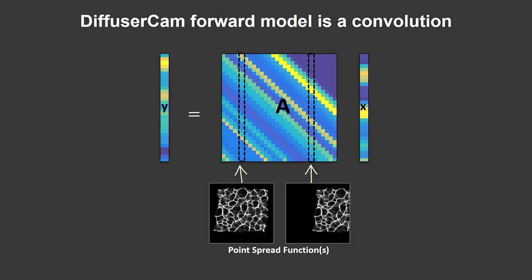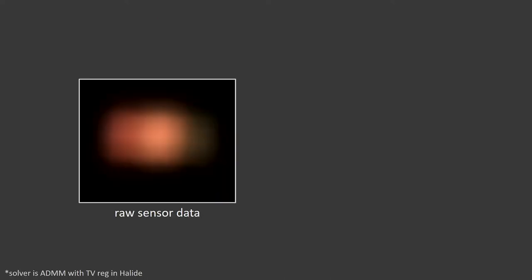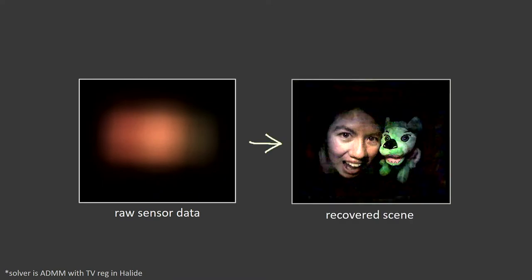It's not exactly a convolution — that's the first-order physical model. We deal with this with low-rank methods. Given this first-order model, the measurement is the point spread function convolved with the object — so take one calibration image with a point source and just do a deconvolution. We solve it with ADMM, a standard optimization solver with TV regularization — total variation — assuming the gradient of the image is somewhat sparse. TV is used as a denoising regularizer. It all runs in real time on a Mac laptop using Halide.